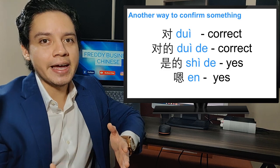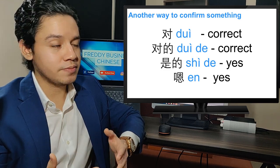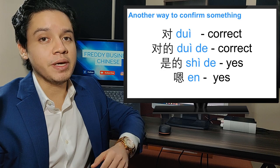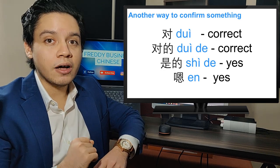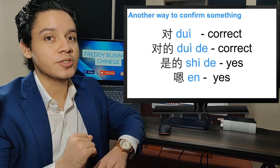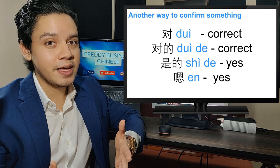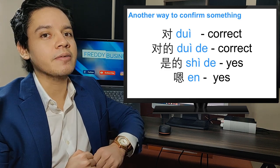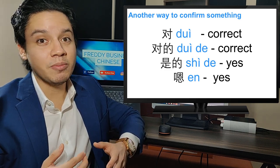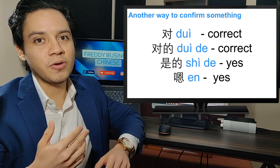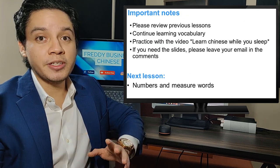Now we have some other ways to confirm or say yes to questions. First we have 对, which means correct. 对的 also means correct. 是的 means yes. And then we have 嗯 — in China many people use 嗯 to confirm anything.